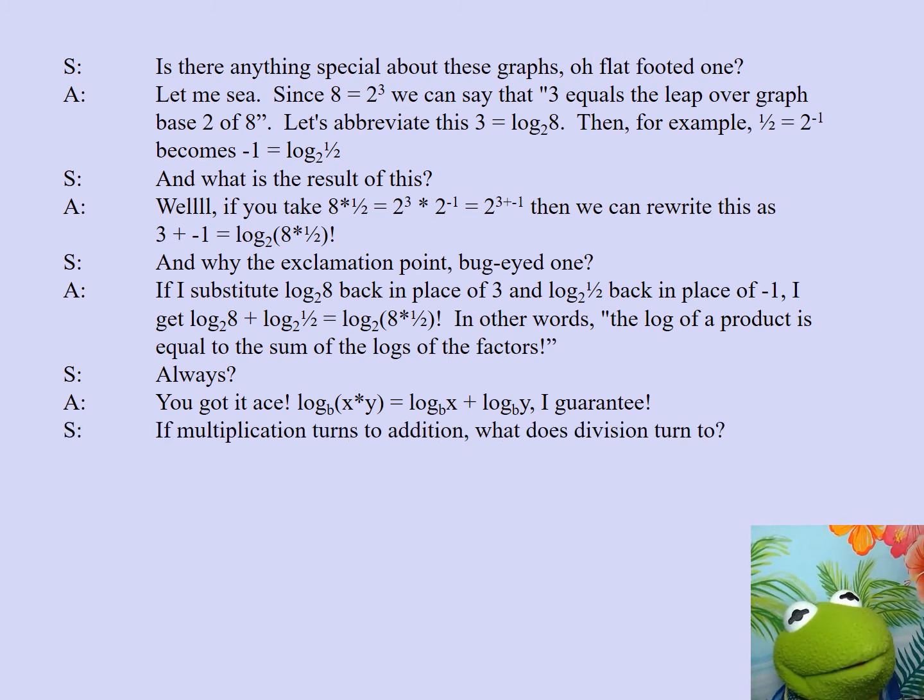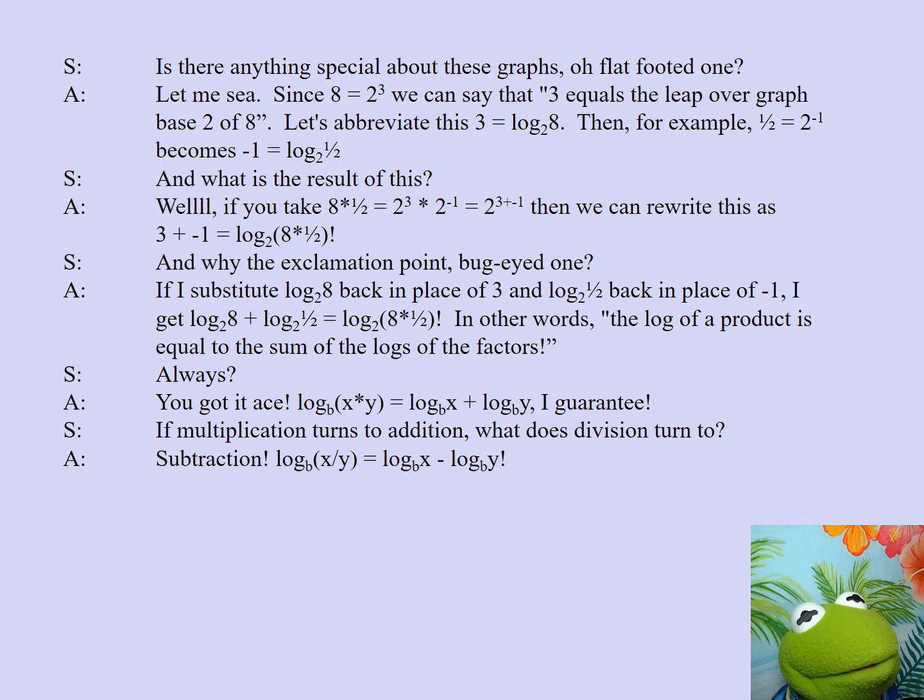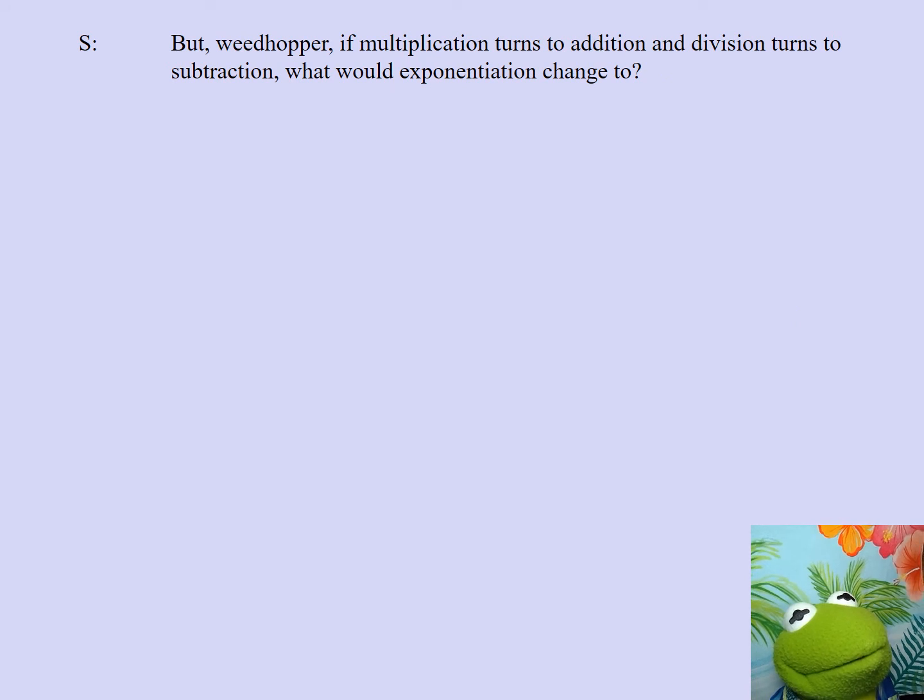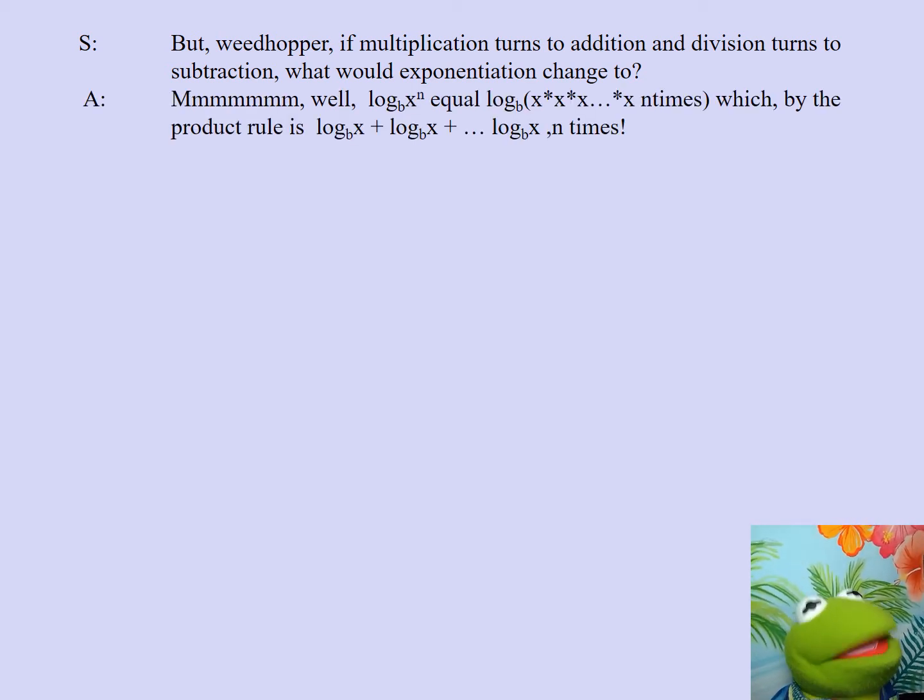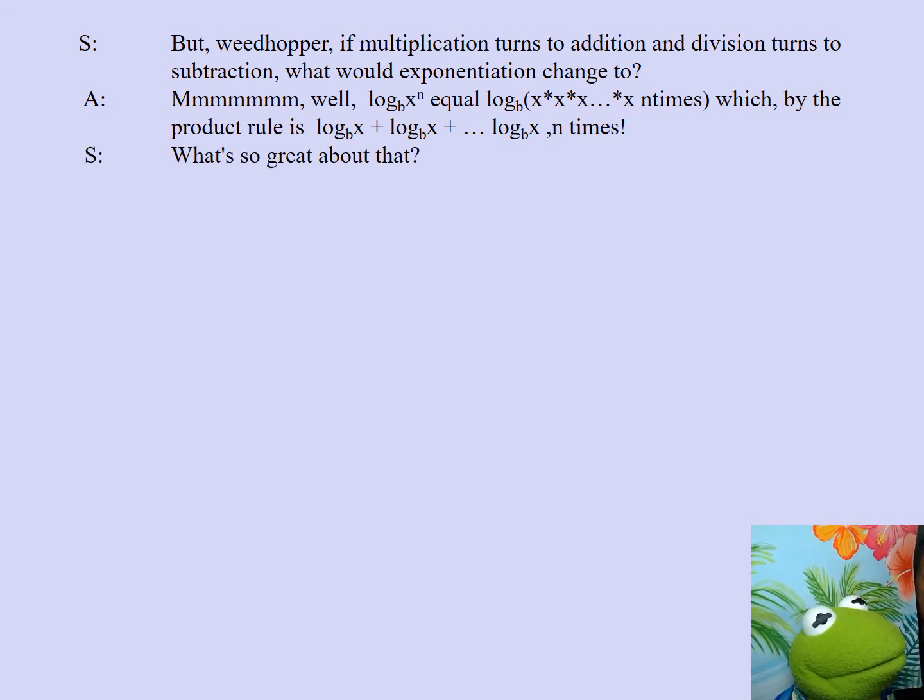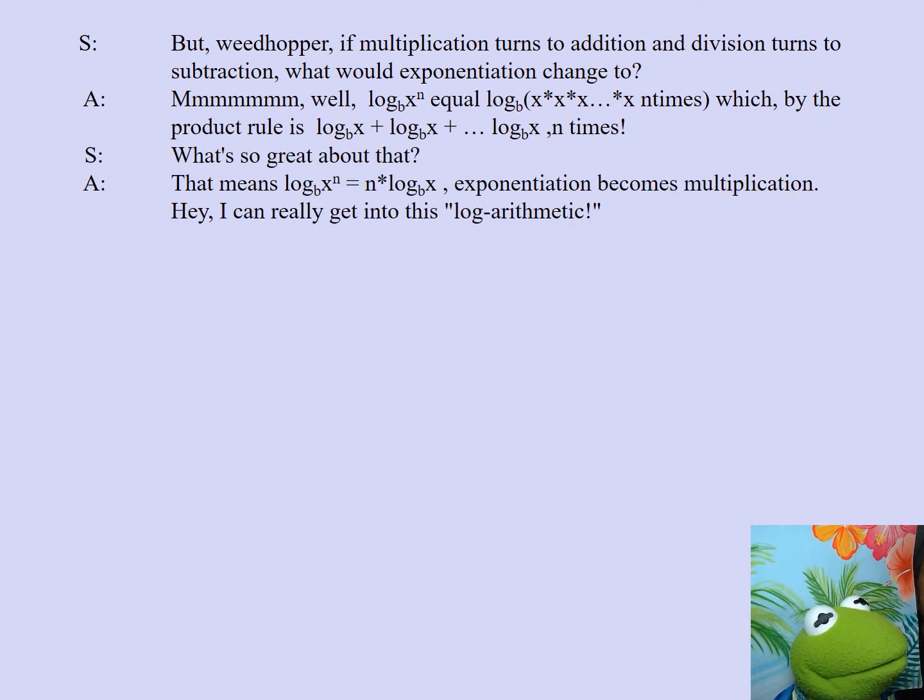If multiplication turns to addition, what does division turn into? Subtraction! Log base B of x over y is equal to log base B of x minus log base B of y. But, Weedhopper, if multiplication turns to addition and division turns to subtraction, what would exponentiation change to? Hmm. Well, log base B of x to the n equals log base B of x times x times x n times, which by the product rule is log base B of x plus log base B of x plus log B of x n times. What's so great about that? That means that log base B of x to the n is equal to n times log base B of x. Exponentiation becomes multiplication.